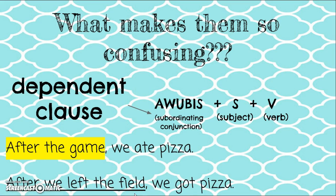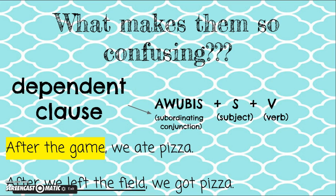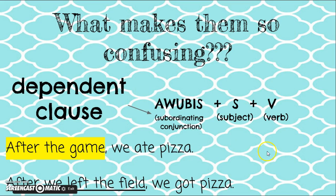In 'After we left the field, we got pizza,' I see the same word 'after' at the beginning, and there is a noun at the end — 'field.' But are the words in between just modifiers? 'The' describes field, but 'we' doesn't modify field. So I have to think: is there a subject and a verb? It's talking about 'we,' and what did we do? We left. So if I have a subject and a verb in there, it's not going to be a prepositional phrase — it's a dependent clause. To review: if it's got a noun with some modifiers, it's a prepositional phrase; if it's got a subject and a verb, it's a dependent clause.